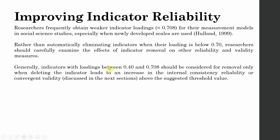Generally, indicators with loadings between 0.40 and 0.708 should be considered for removal only when deleting the indicator leads to an increase in internal consistency reliability or convergent validity above the threshold value. If reliability and validity were below the threshold and your indicator loading was less than 0.70 — say 0.40, 0.50, or 0.60 — you only remove it if it significantly improves reliability and validity above the threshold.